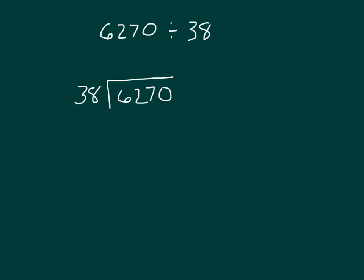First off, we'll start with this 6, which is worth 6,000s. Can we divide 6,000s by 38? The answer to that is no. We have to regroup the 6,000s to 60 hundreds, and we put it together with the 2 there to have 62 hundreds.